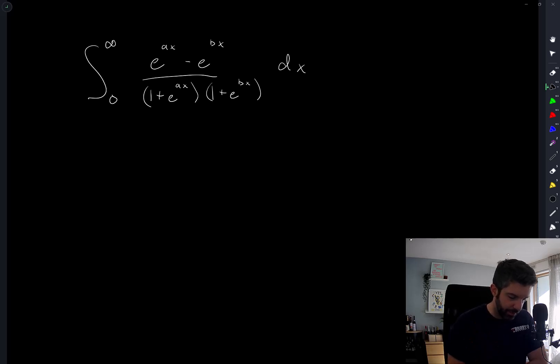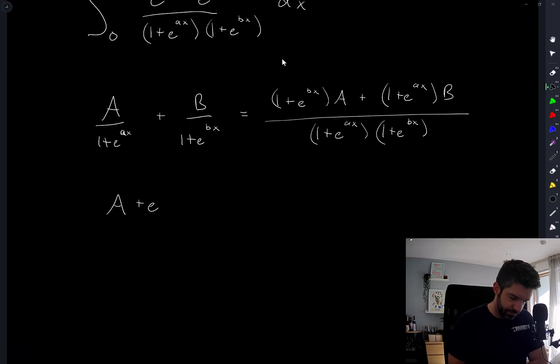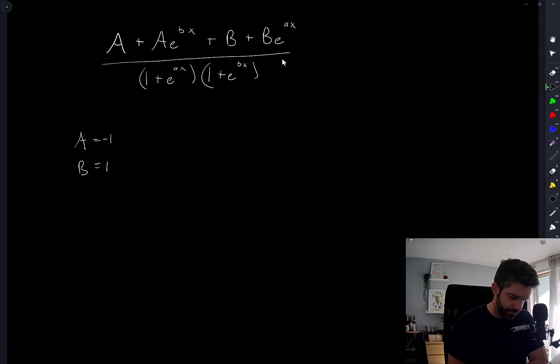If I want to write this, I'm going to do a little bit of rough work here, but I'm going to write a over one plus e to the ax plus b over one plus e to the bx and see if I can choose a and b in such a way that I get what's written above. Yeah, so I get that we can rewrite this as a sum of two functions, which are both pretty simple and can probably be integrated directly.